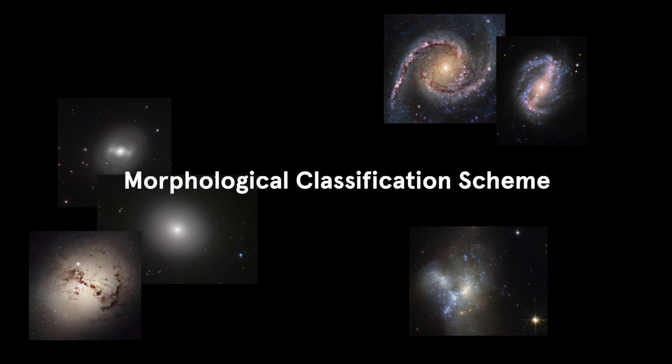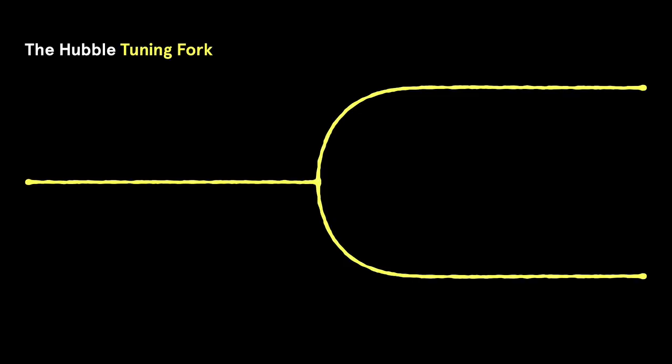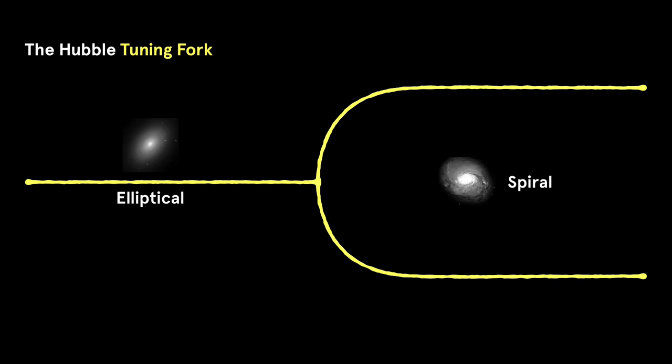The most famous of these is the Hubble Tuning Fork. Hubble divided galaxies into elliptical galaxies and spiral galaxies, with the intermediate lenticular or S0 class in between. Elliptical and lenticular galaxies are collectively known as early-type galaxies because of their simple appearance. Spiral galaxies are known as late-type galaxies because of their complex structure.